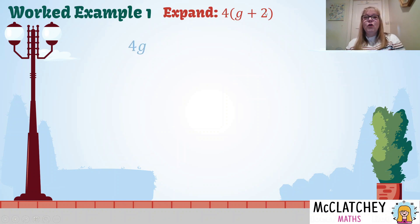So 4 by g gives me 4g. 4 by 2 gives me 8. A common mistake students might make here is remembering to multiply the first one, 4 times g, and then often students will forget that the 4 is also multiplied by the 2.